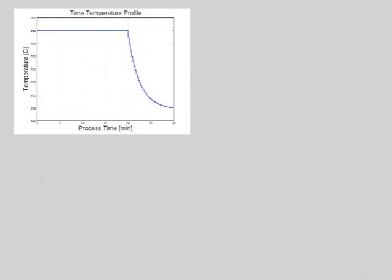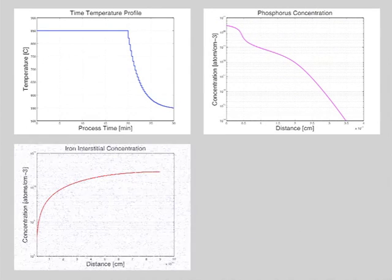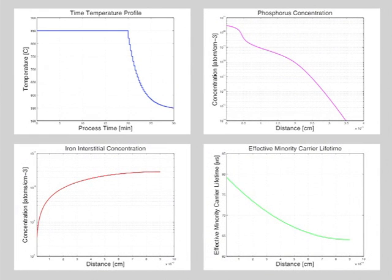I2E outputs the characteristics of the simulated solar cell, including the final phosphorous emitter profile, iron distribution, charge carrier lifetimes, and device efficiency.